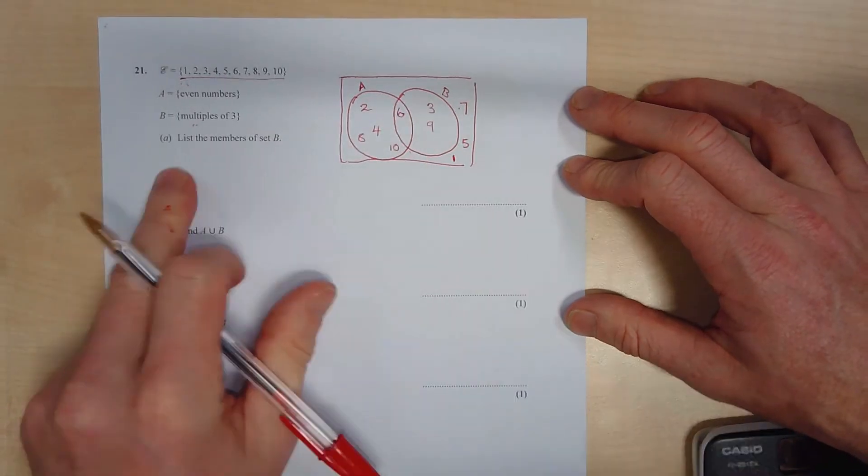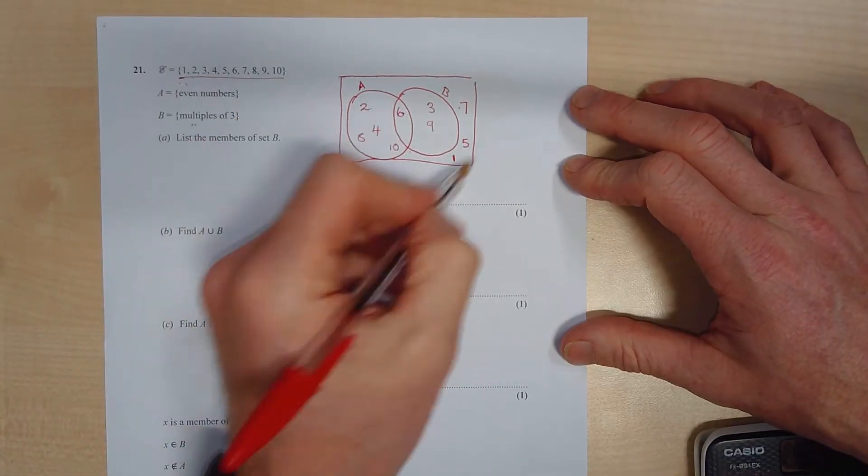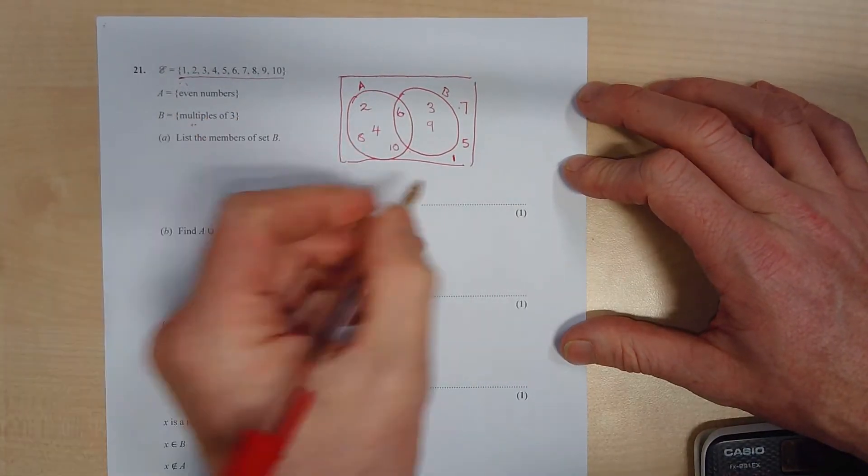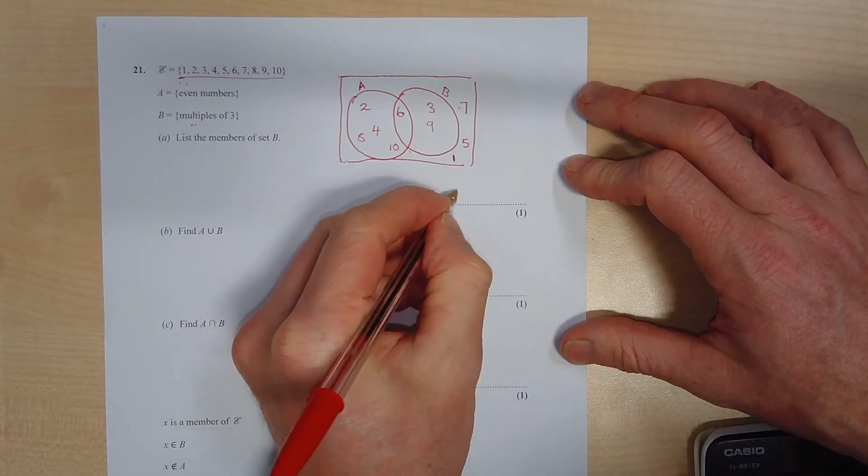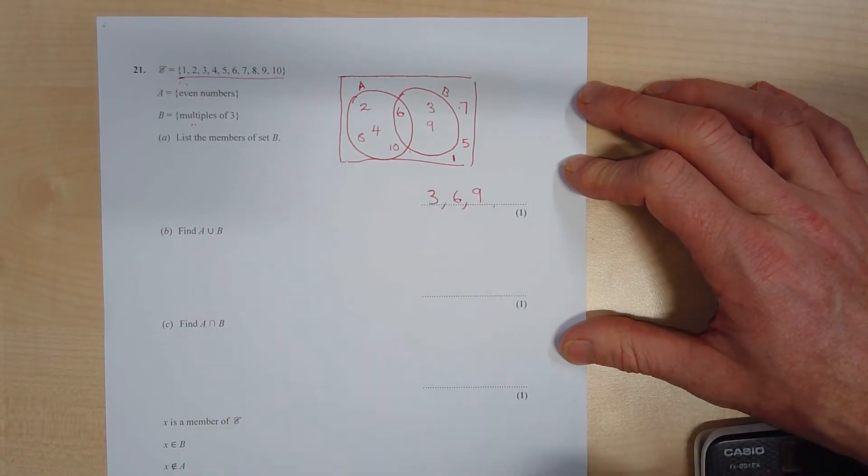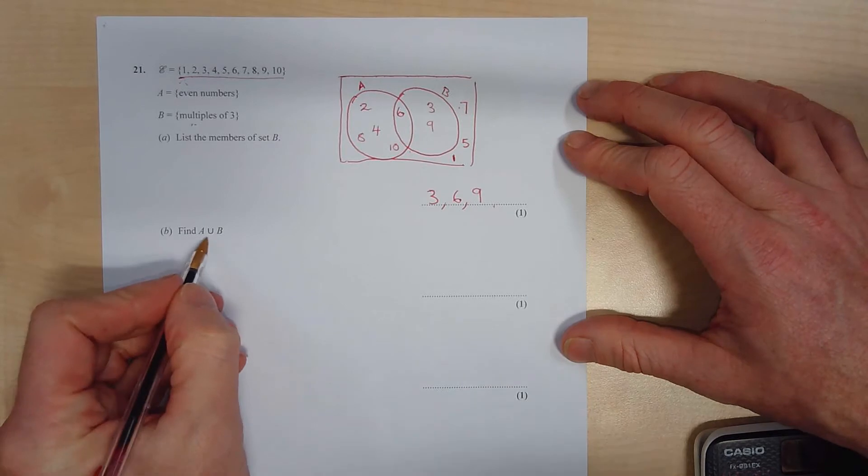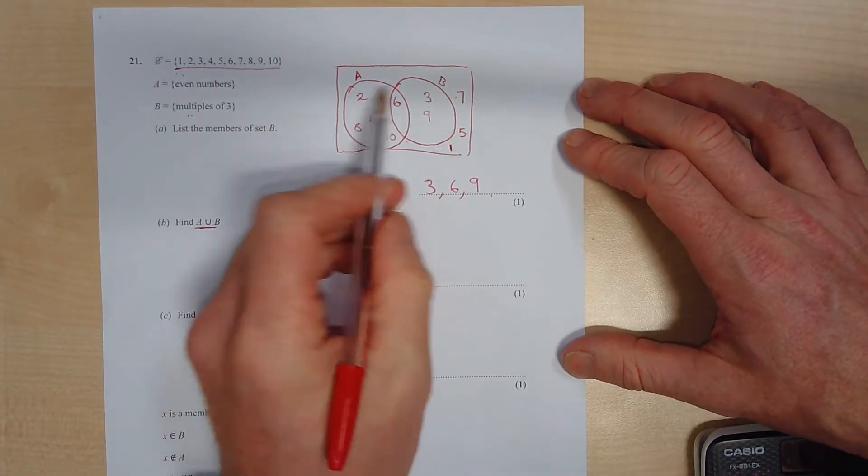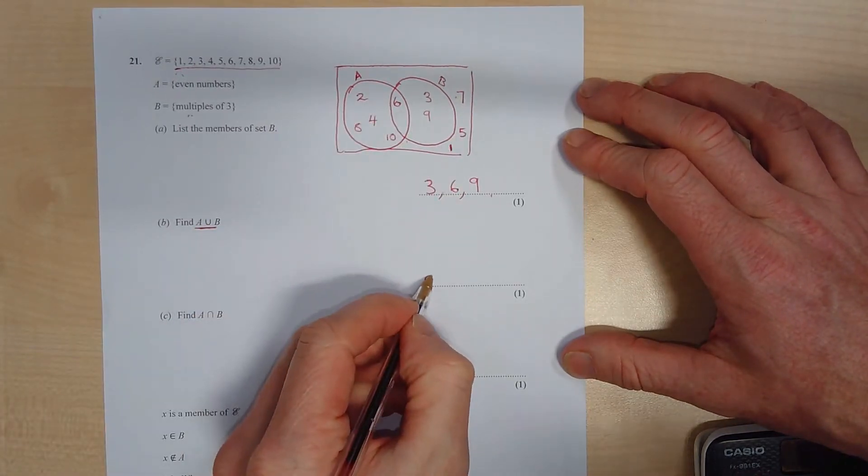Okay, now it's going to be much easier. So if we list the members of set B, we can go to the circle or we can actually go to the question, which is going to be 3, 6, and 9. Okay.